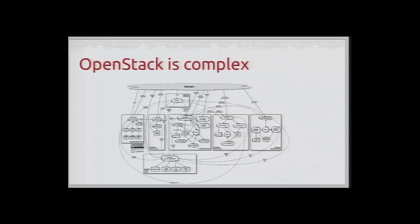The second aspect is that it's complex. Today in Juno, it's more than 11 integrated projects, and each of those projects are really more like a framework that you can deploy in various ways with various options and backends. And even the interactions between those projects are quite complex — it's not just a clean API. Sometimes it's more like a protocol where you have to go back and forth, like between Nova and Neutron. So it's complex.